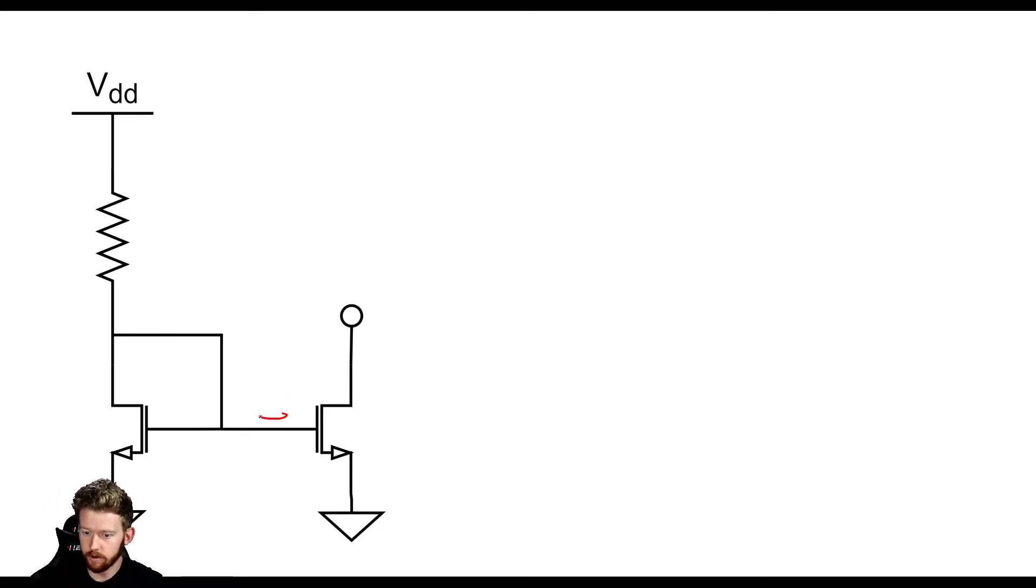So remember there is no current into these gates, no current into these gates, so that means that there is still this same reference current flowing through here I0 and this I0 again is proportional to this resistor. Now this I0 is going to give us a gate voltage here so it's going to give us a gate voltage and I'll just call it VGS. Now remember the output of a MOSFET is related to VDS and VGS.